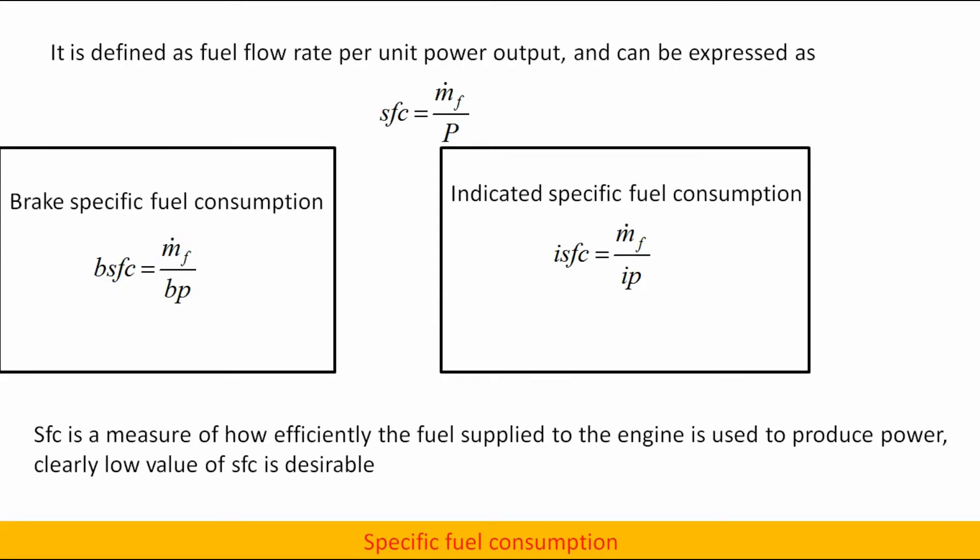Specific fuel consumption is defined as the fuel flow rate per unit power output: SFC = m_dot_f / P. Brake specific fuel consumption is m_dot_f / Brake Power. Indicated specific fuel consumption is m_dot_f / IP. Specific fuel consumption is a measure of how efficiently the fuel supplied to the engine is used to produce power. Clearly, a low value of SFC is desirable.